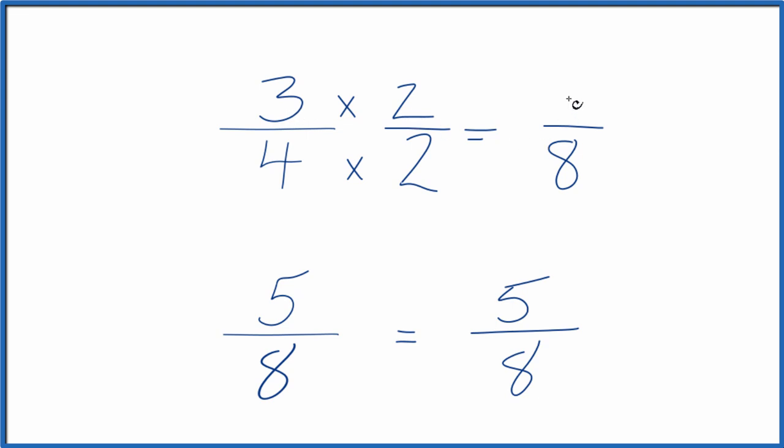3 times 2, that's 6. And 6 eighths, if you divide 6 by 8 or 3 by 4, you get the same answer, 0.75. These are equivalent.